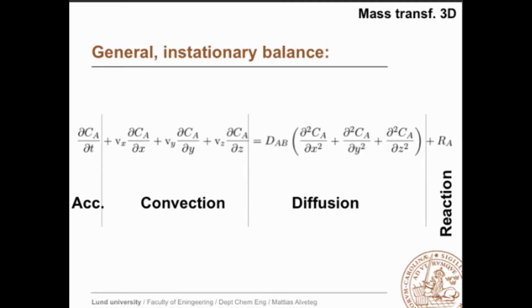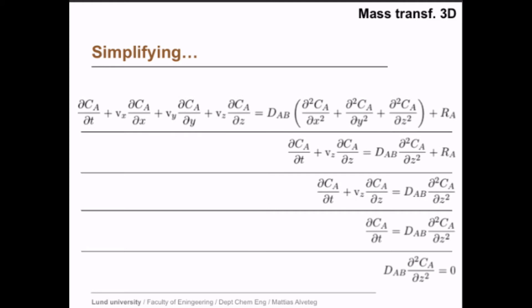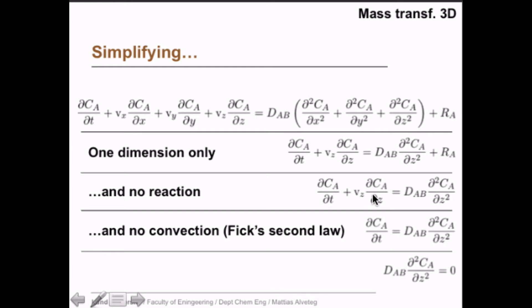Often you don't need an entire general instationary balance, so often you simplify. So we have one dimension, you take away everything that's not with respect to the z-axis direction. If you have no reaction, of course, then you take away RA. If you have no convection, then this term disappears as well. And if you have stationary conditions, the accumulation term vanishes as well.